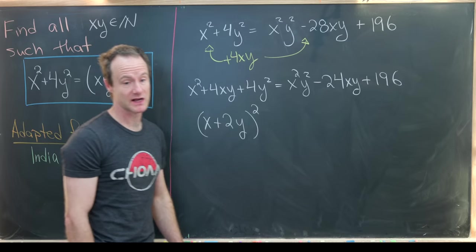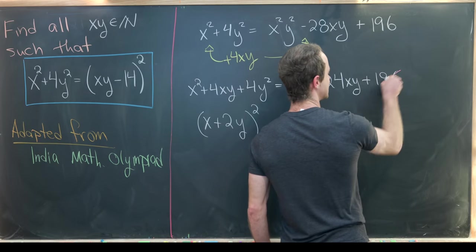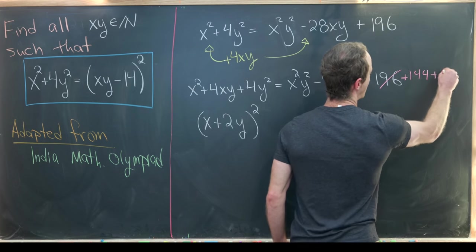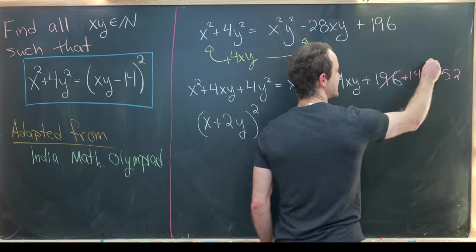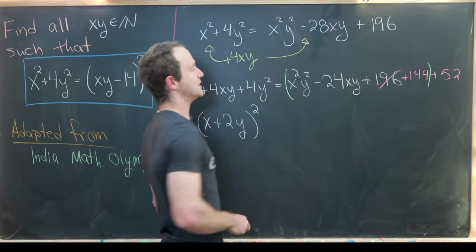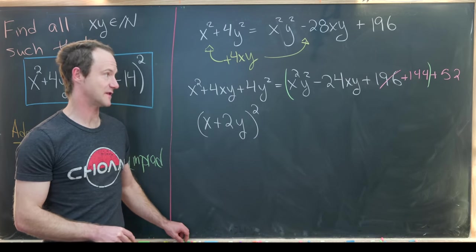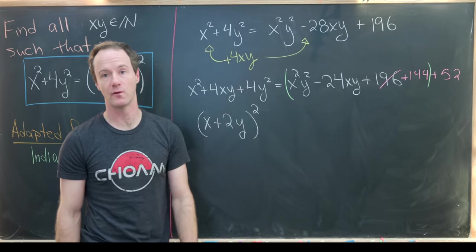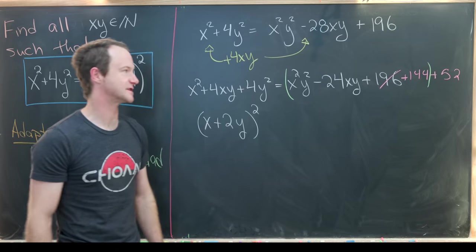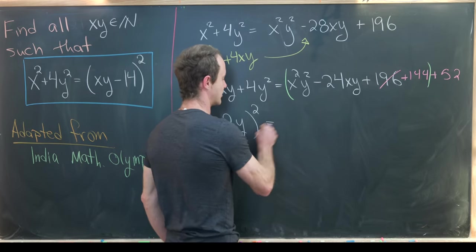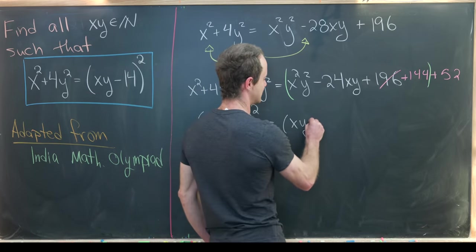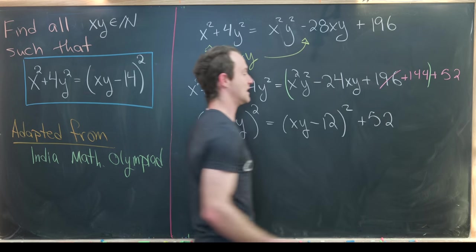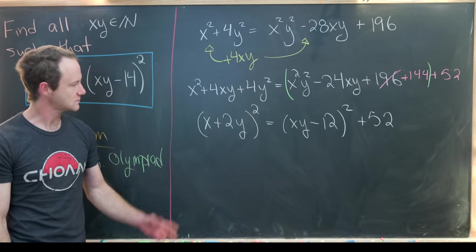Actually that's pretty possible. We can take this 196 and write it as 144 plus 52. Then doing some grouping we see that what is in these green parentheses is actually a perfect square. That's because 12 squared is 144 but 12 plus 12 is 24. So let's factor that green parentheses as x times y minus 12 quantity squared and then left over we have plus 52.